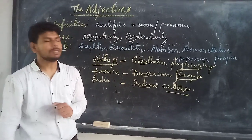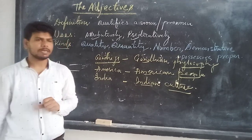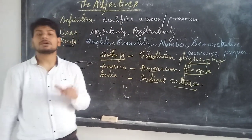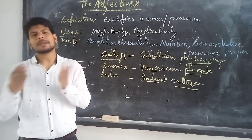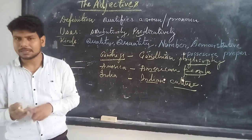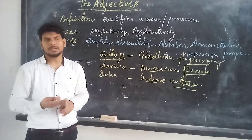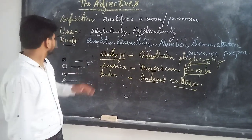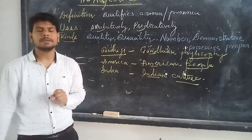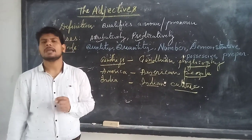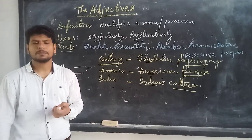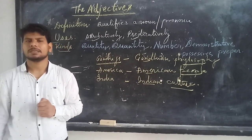So to conclude, adjectives are a very important topic in the English language. The definition: an adjective qualifies a noun and pronoun. The two uses are attributive — when used in front of a noun — and predicative — when used as a complement to a subject. The kinds covered include quality, quantity, number, demonstrative, possessive, and proper adjectives. Hope this helps you understand adjectives a little better. Thank you and have a nice time.